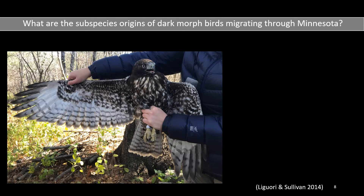As I mentioned earlier, about one to two percent of red-tailed hawks migrating through Duluth are dark morphs. On some occasions, the dark morph birds observed migrating through Minnesota are Harlan's, which are known to be polymorphic like the Chloris subspecies. However, when these dark morphs aren't obviously of the Harlan's group, which subspecies are they from?